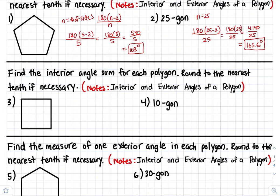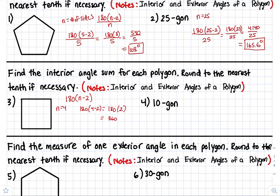Now, when you try to find the interior angle sum for each polygon, the formula is 180 times (n minus 2). This formula will allow you to find the total sum of all the interior angles of a polygon. Of course, n is the number of sides. So for a square, n is equal to 4 — it has four sides — so 180 times (4 minus 2) equals 360 degrees.